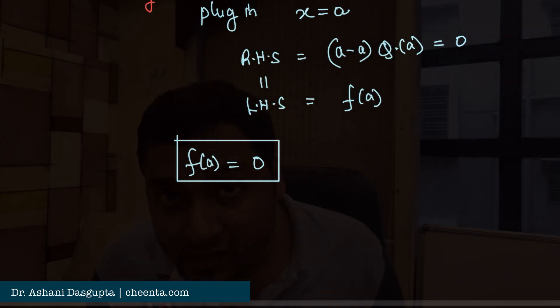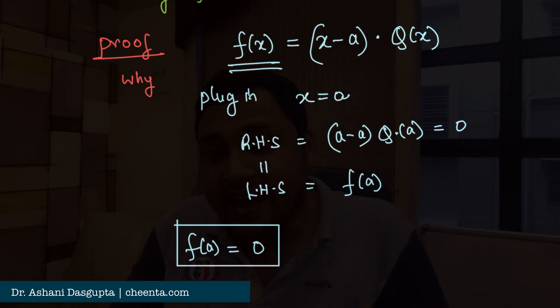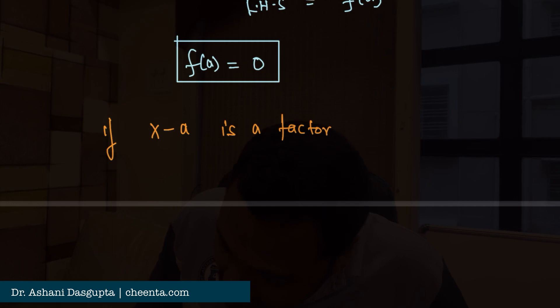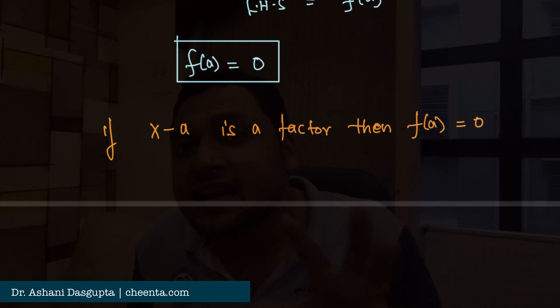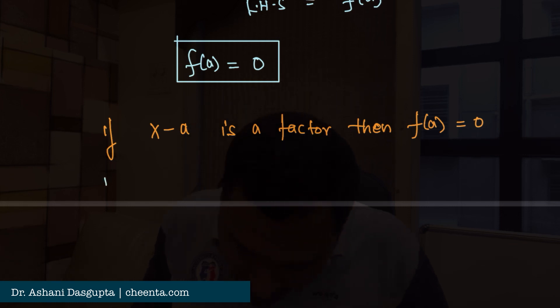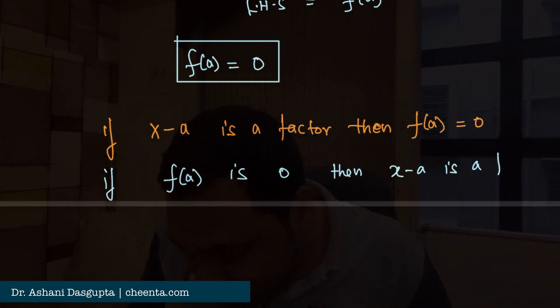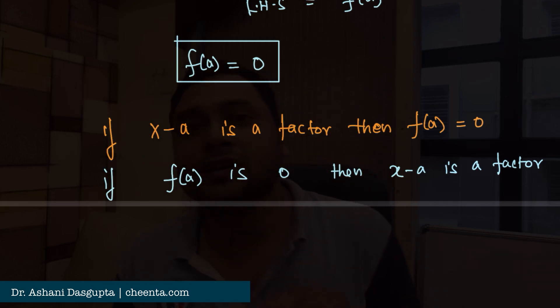I want to make a subtle point that students sometimes miss. What I just showed is: if (x − a) is a factor, then f(a) = 0. But I want you to find an argument showing the other direction — if f(a) = 0, then (x − a) is a factor. It's very easy; put your argument in the comment section and I'll tell you if it's right.